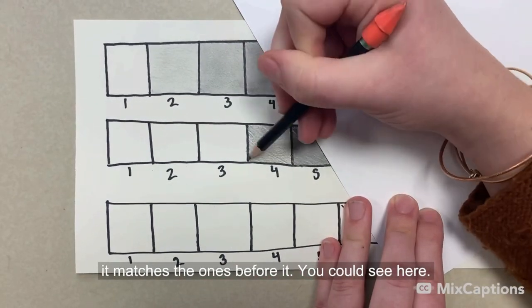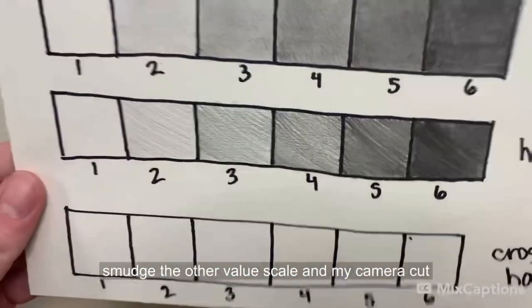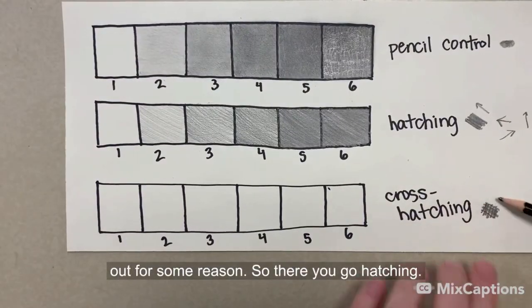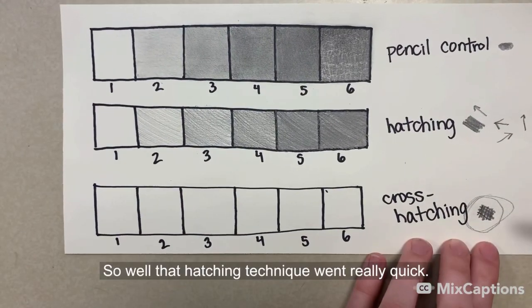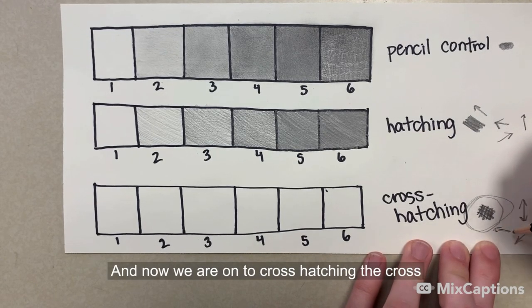You could see here I'm holding a piece of paper so that way I don't smudge the other value scale. And my camera cut out for some reason, so there you go, hatching. So that hatching technique went really quick and now we're on to cross hatching.